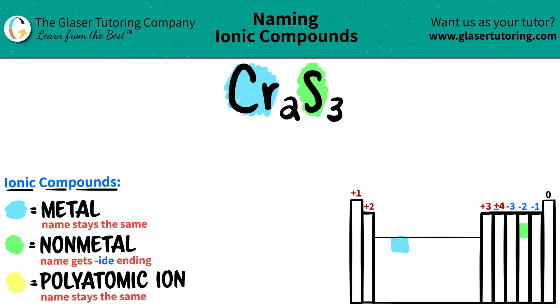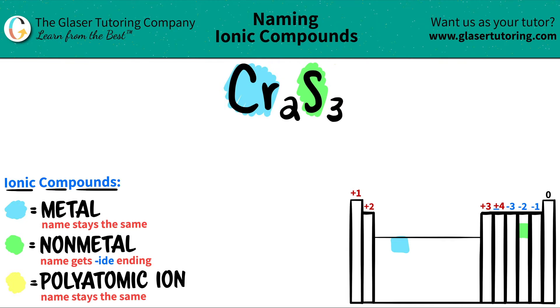Let's get to naming. The metal name always comes first and that one always stays exactly the same. So chromium on the periodic table becomes chromium for naming.